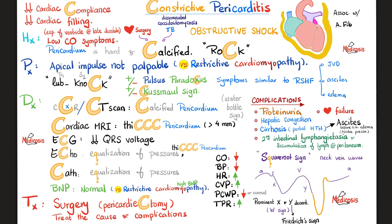Constrictive pericarditis summary: very thick, calcified pericardium — hard as a rock — means low cardiac compliance. Low compliance means low cardiac filling, especially in late diastole when ventricles try to stretch maximally and hit the pericardium. Low input equals low output. On auscultation, you hear a 'lub-knock' instead of lub-dub — during diastole, ventricles relax until they hit the calcified wall, producing the knock. Pulsus paradoxus, Kussmaul's sign, JVD, ascites, and lower extremity edema may all be present.